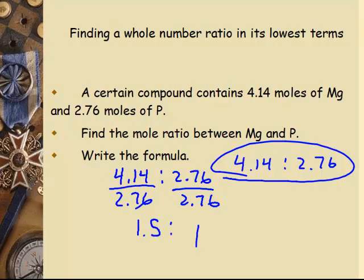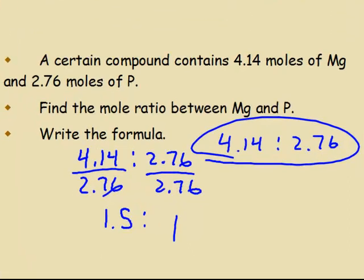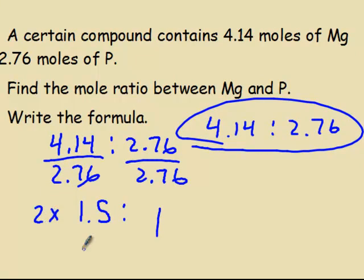So I get a 1 to 1.5 again. There's that 0.5 again. And again, that's going to come up quite often. So I'm going to multiply that times 2 because that gives me the whole number 3. And whatever I do to that side, I have to do to that side or I change the ratio. So it is a 2 to 3 ratio.